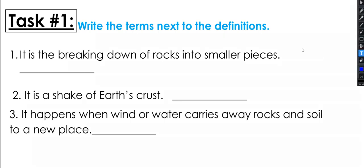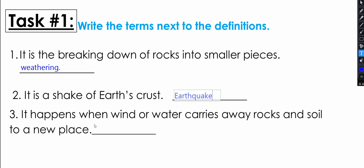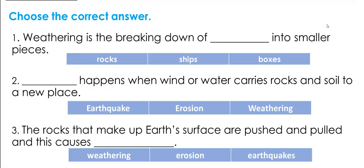For number one, the breaking down of rocks into smaller pieces is weathering. For number two, the shake of Earth's crust is earthquake. For number three, it happens when wind or water carries away rocks and soil to a new place — that is erosion. Great job!